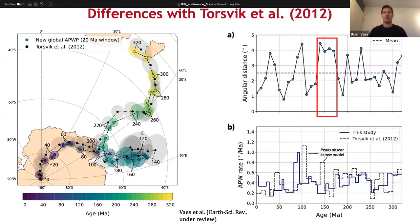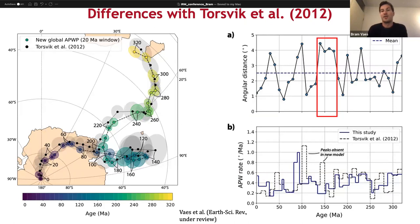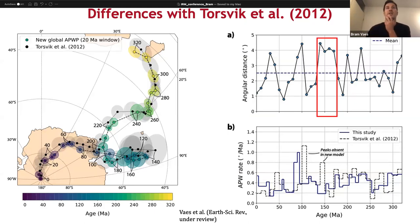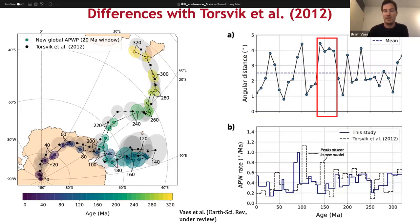The Jurassic part of the previous global APWP was the most uncertain because there was a lack of well-defined data — you can see in the figure that the confidence regions of the Jurassic part of the previous global APWP were the largest. People went out in the last 10 years or so to collect more high-quality data, and that actually resulted in a different mean pole position. With this different dataset, the difference between our path and that of Torsvik et al. is about 4 degrees — the largest difference where the uncertainty of the previous path was largest. So that's pretty nice actually.